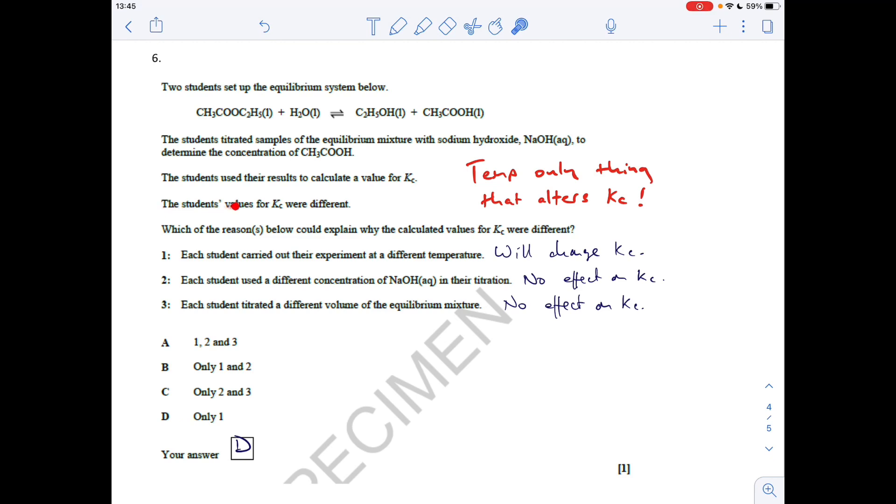The final question is about this homogeneous equilibrium system between an ester, water, alcohol, and carboxylic acid. The student's values for Kc were different. Which reasons could explain why the Kc values differ? First thing I'd think is temperature is the only thing that alters Kc. Option one: each student carried out their experiment at a different temperature. Yes, that will change Kc. Two: each student used different concentrations of sodium hydroxide in their titration. No, that won't change Kc because only temperature does. Three: each student titrates a different volume of the equilibrium mixture. No, that won't change Kc either. It's only temperature that alters Kc, so only one was correct - D was the answer.